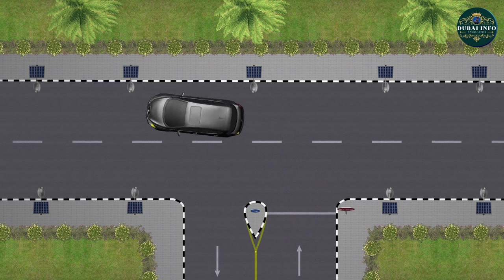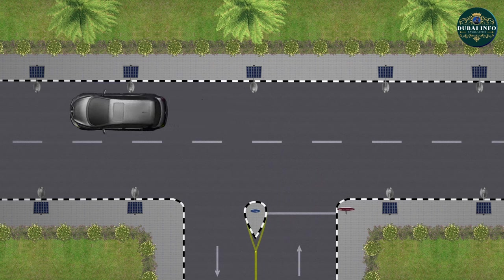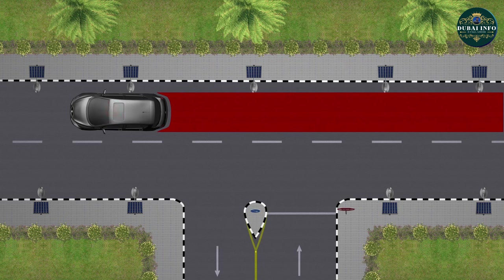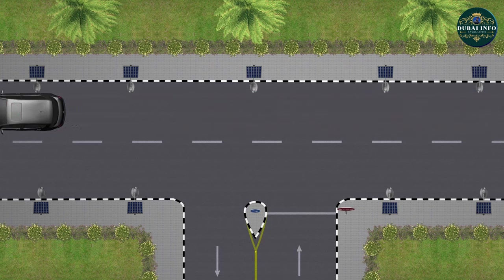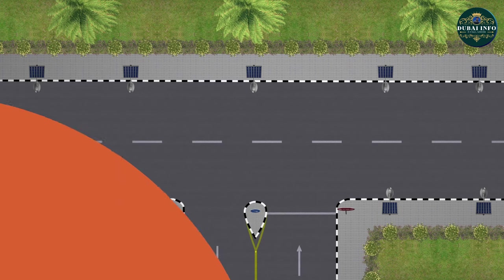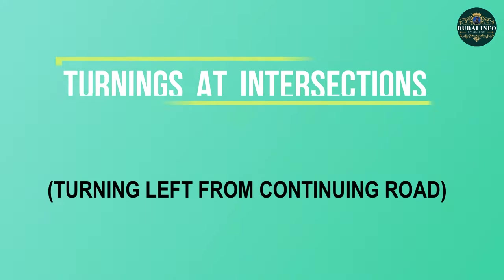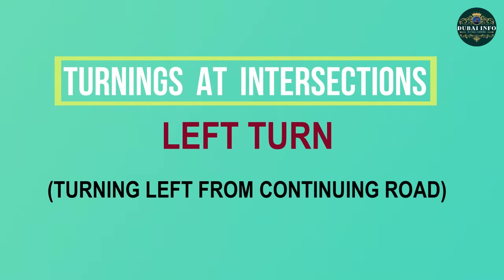After completing the turn, check centre mirror to see the traffic behind. Cancel the signal and increase the speed gradually up to the required limit as per the condition of the road. Turning left from continuing road.